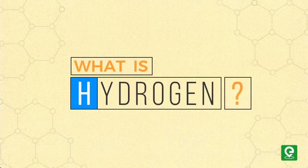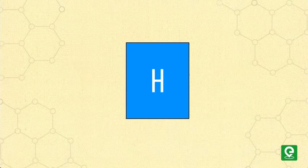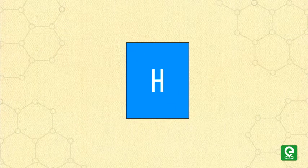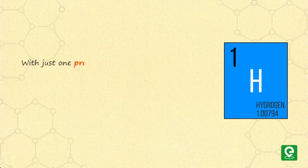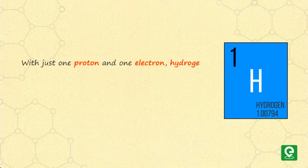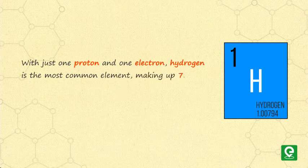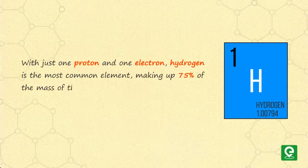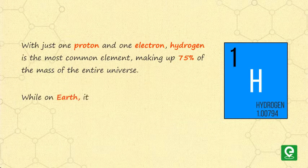What is hydrogen? Hydrogen is a chemical element whose symbol is H and atomic number and atomic mass is equal to one. With just one proton and one electron, hydrogen is the most common element in our universe, making up 75% of the mass of the entire universe. While on earth, we rarely find hydrogen in a free state due to its high reactive nature.